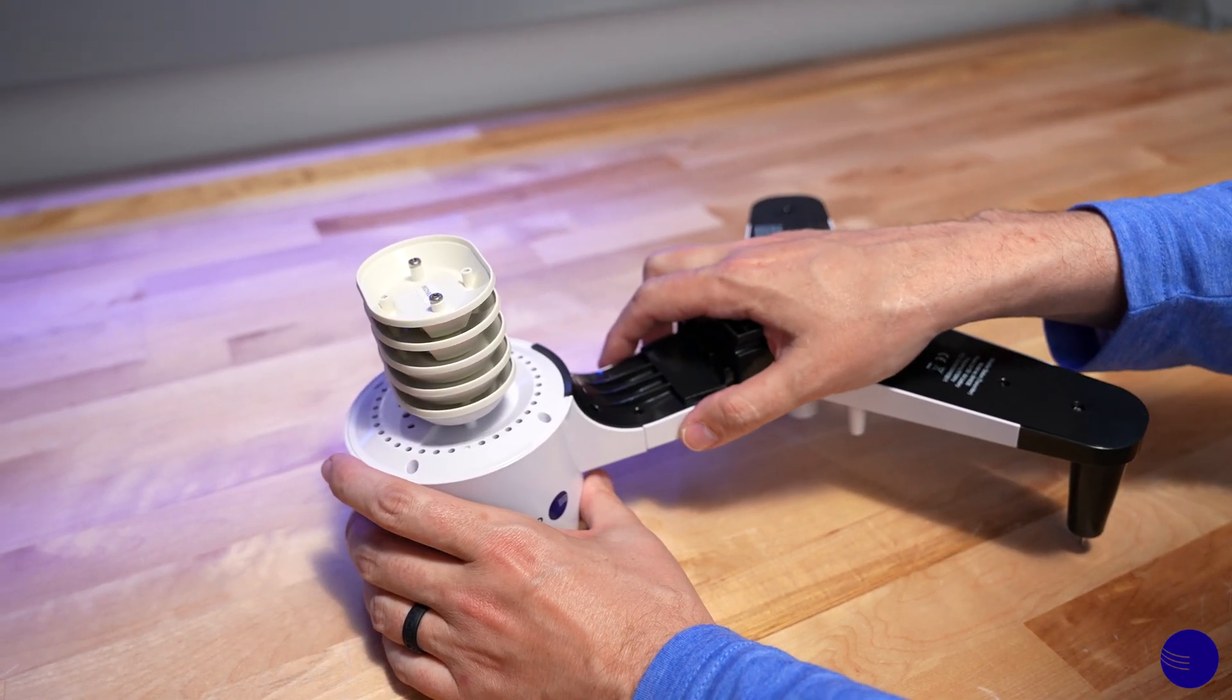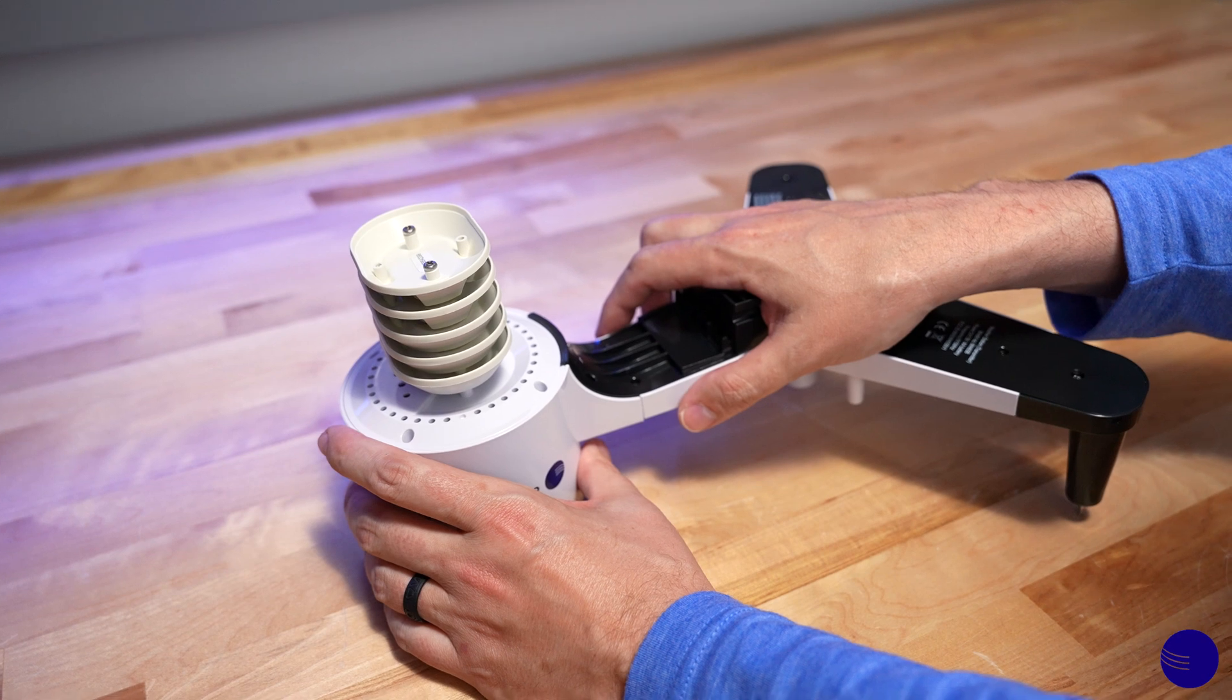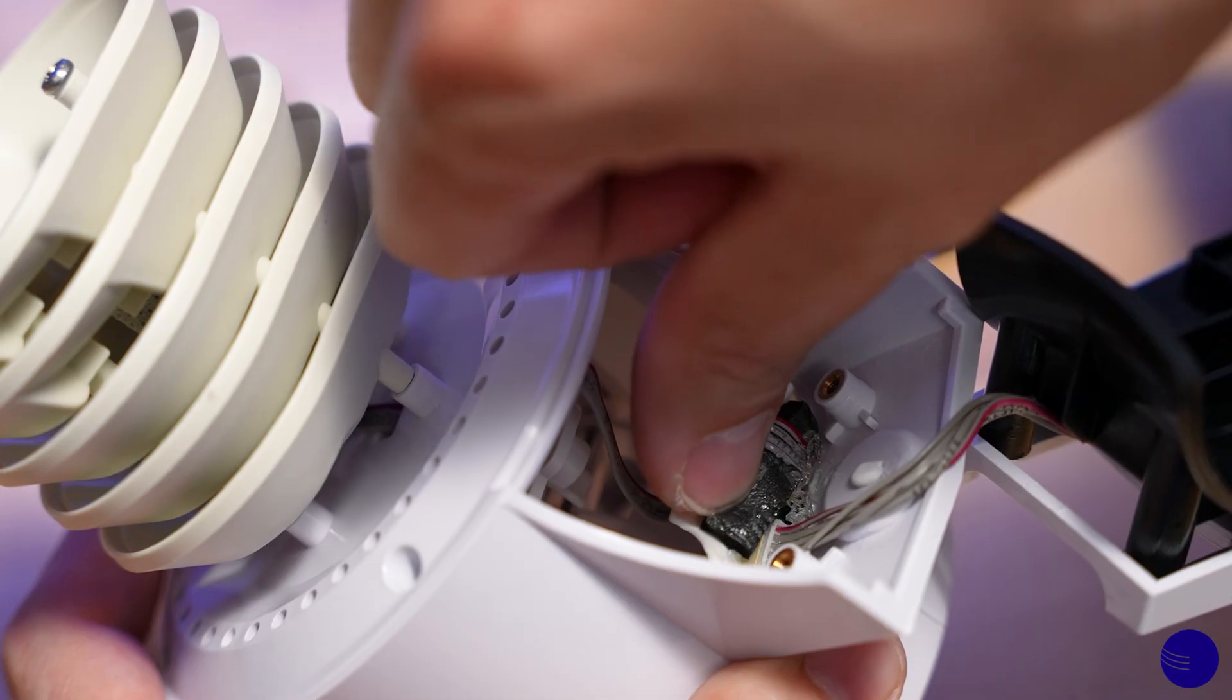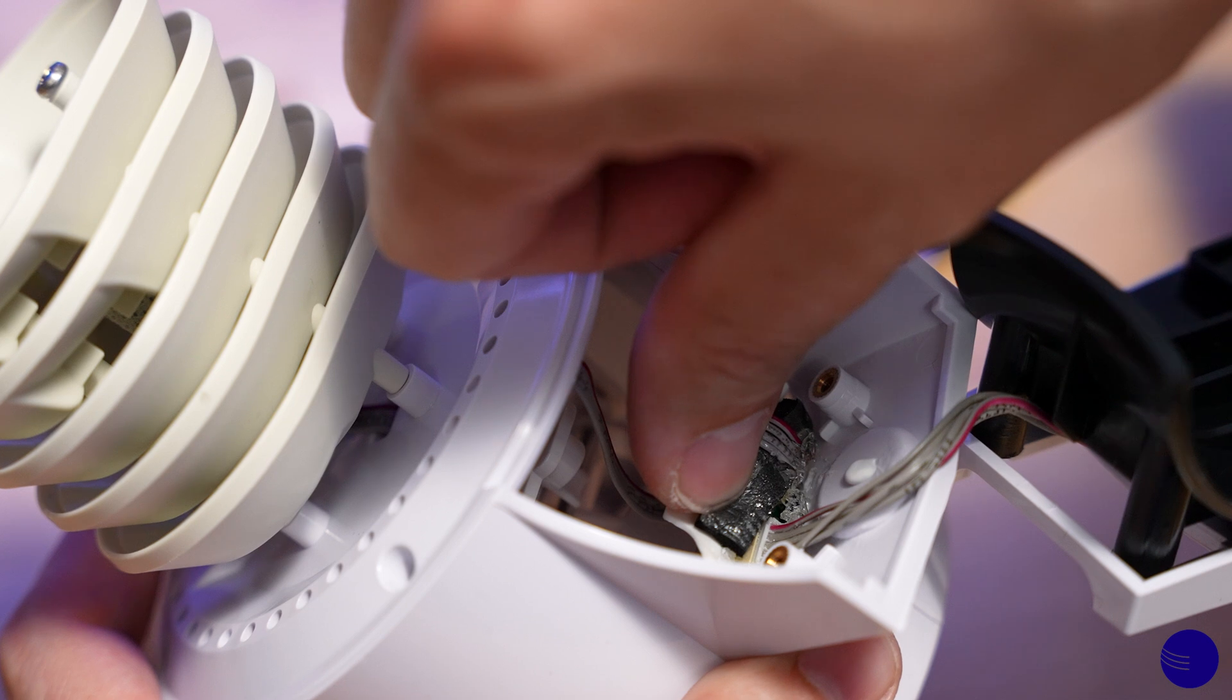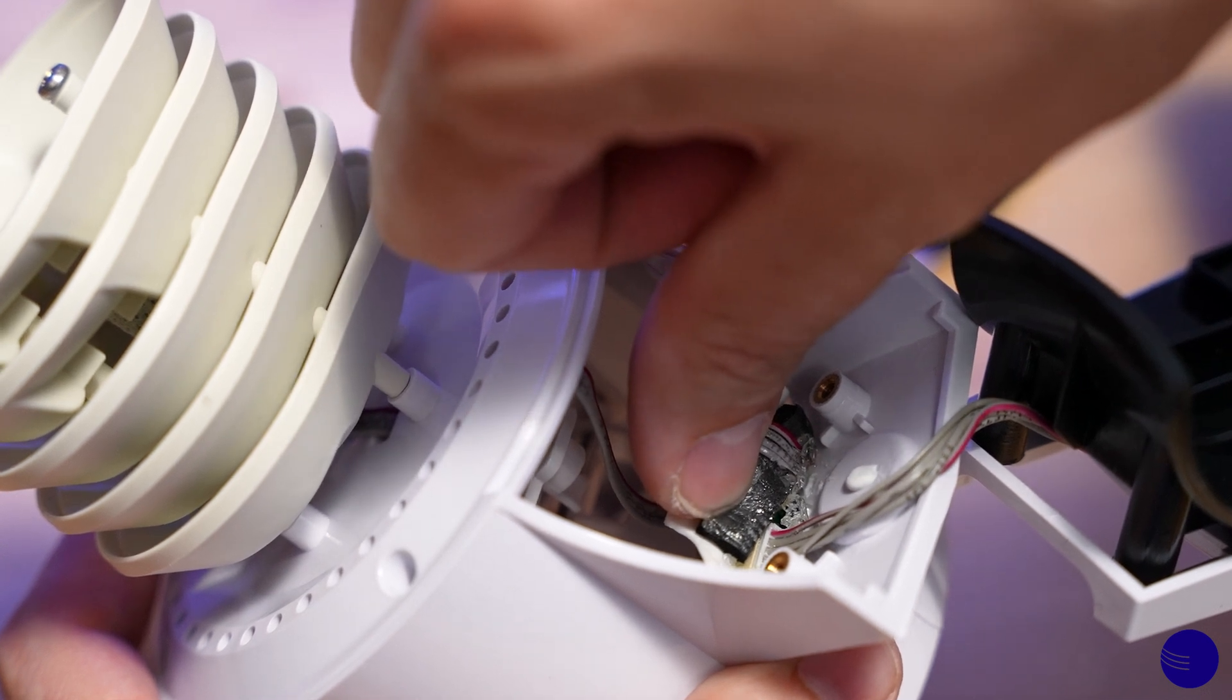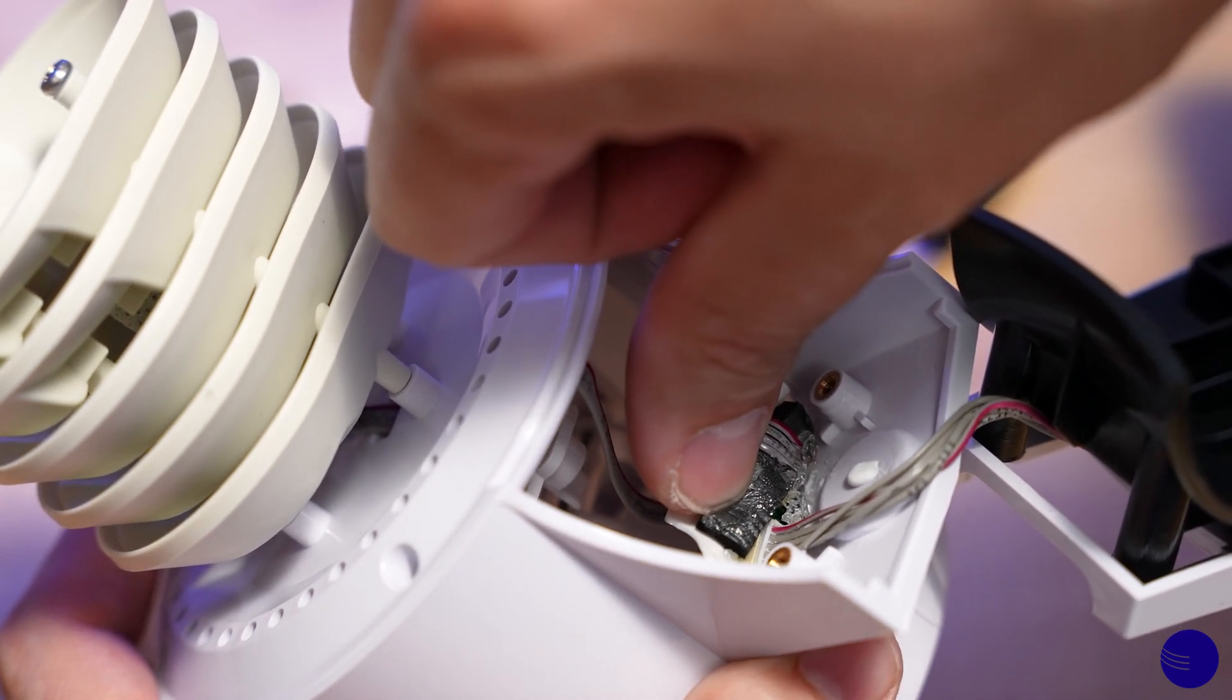Now that we've removed the screws, we can remove the rain gauge from our WS2902 array. We'll lift up the foam pad. There may be the presence of dielectric grease; this is to prevent the connection from corroding.